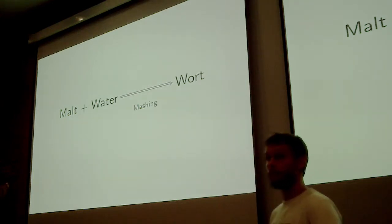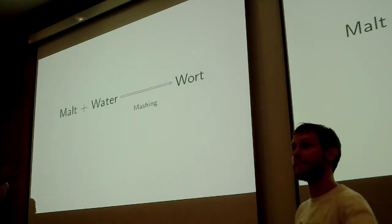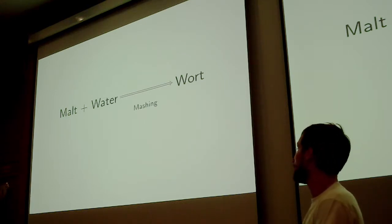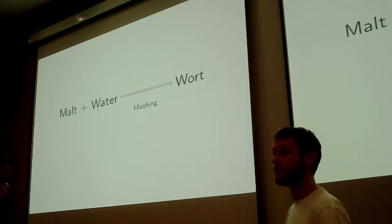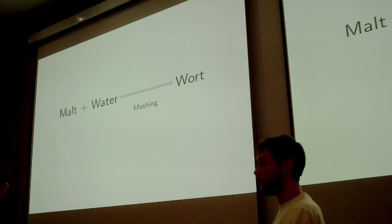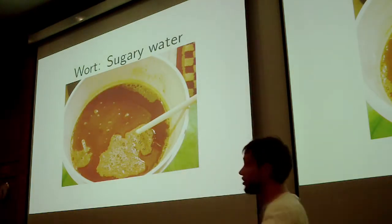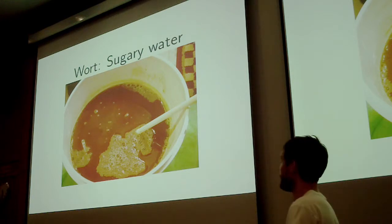So what we do with the malt is we basically mash it. So mashing involves basically making porridge or cooking it at about 65 degrees. What this does is the enzymes inside the malt break the starch down into sugars. That's what we want which we call the wort. So the wort is sugary water. So anything with sugary you can basically ferment.